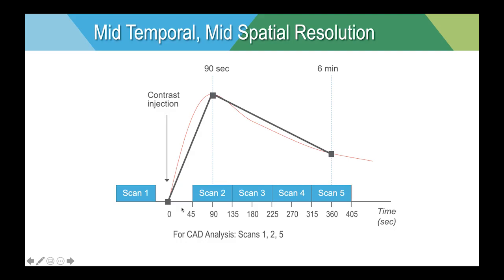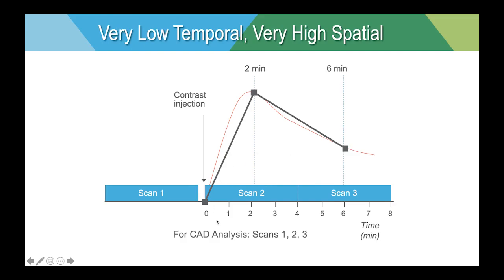A sequence adjusted slightly more towards spatial and less towards temporal resolution might use four post-contrast sequences instead of eight, each one and a half minutes long instead of one minute long — giving slightly higher resolution but fewer points on the curve. Pushing further, very long sequences up to four minutes provide very high spatial resolution, very thin slices, and very small pixels. However, there will only be three points on the curve — and that's fine if your team wants to read examinations that way.